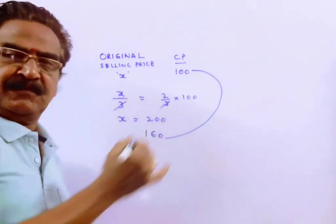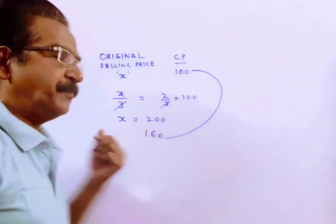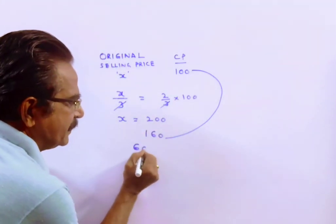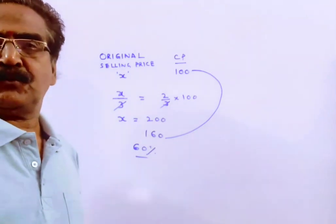Cost price 100, selling price 160. So profit is 60 percent. 60 percent is your answer.